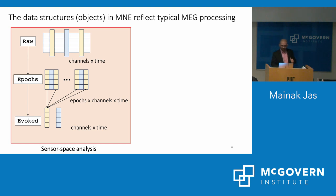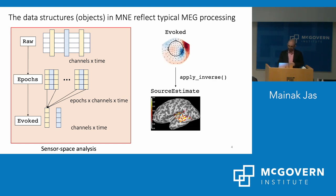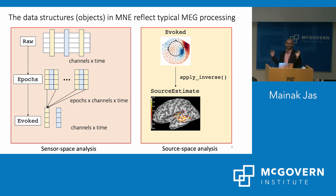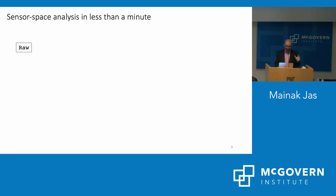People working with EEG often stop at evoked responses, but in the MEG world it's common to go further to source estimates — known as source space analysis. I'll give you a brief flavor of what can be done in sensor space and source space, though there's a whole lot more you can do, as David Poeppel's talk was essentially an advertisement for what you can do with MNE-Python.